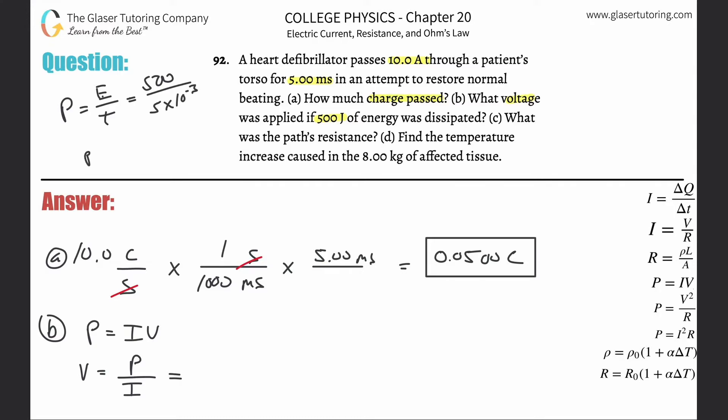And now what we can do is we can simply solve then for the power. So it's going to be 500 divided by 5 times 10 to the minus 3. And it's simply going to work out to be 1 times 10 to the fifth watts. And you can consider sig figs or you don't really have to at this point. Now this is the power.